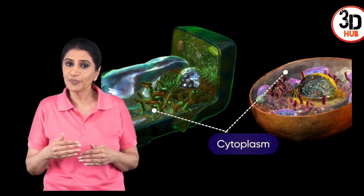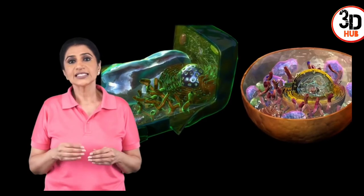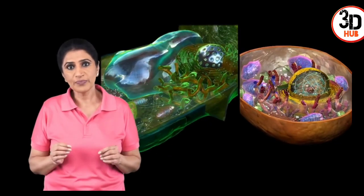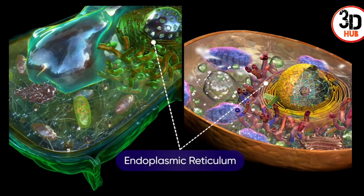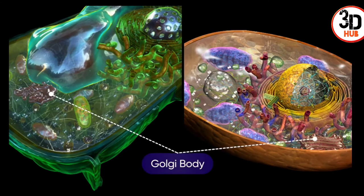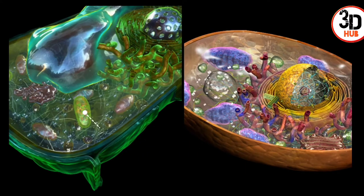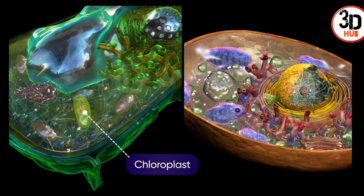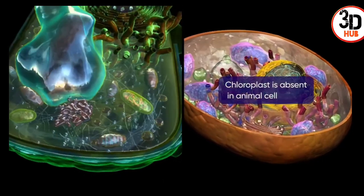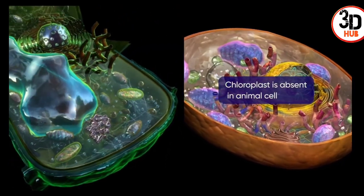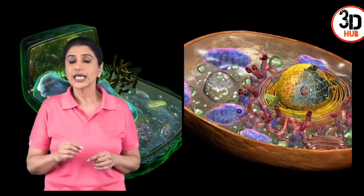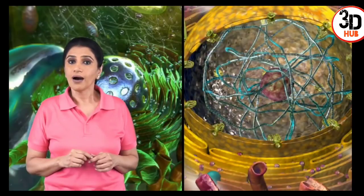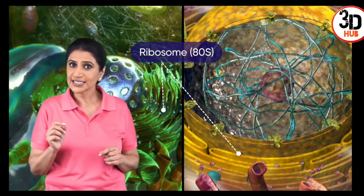The space between the nucleus and the plasma membrane is occupied by the cytoplasm, which helps in providing shape to the cell. It is marked by the presence of membrane-bound cell organelles like the endoplasmic reticulum, Golgi body, mitochondria, chloroplasts, and lysosomes. Chloroplasts are characteristic of plant cells and are the sites of photosynthesis. The ribosomes in a eukaryotic cell are of the 80S type.